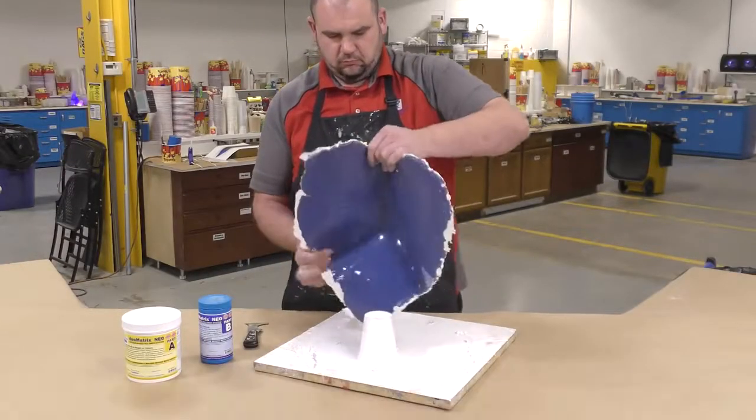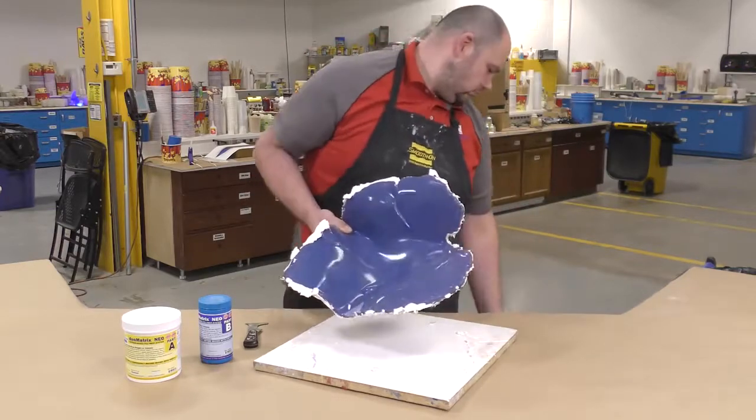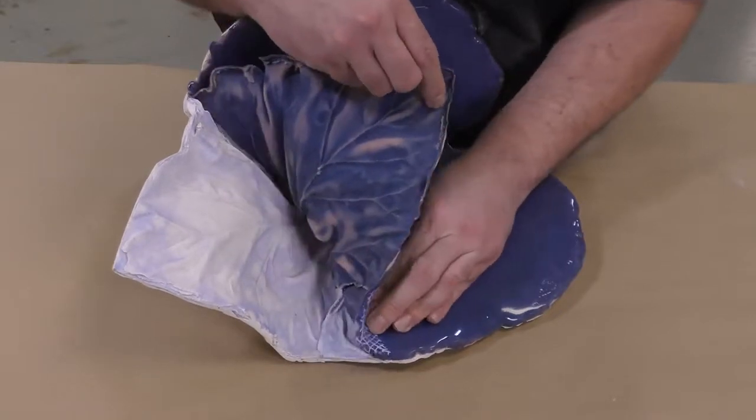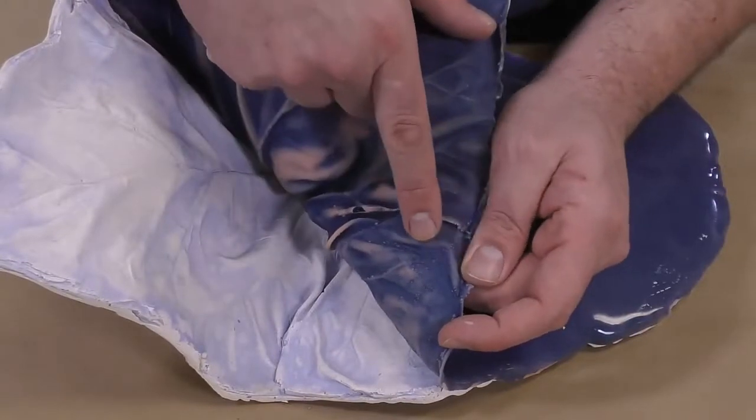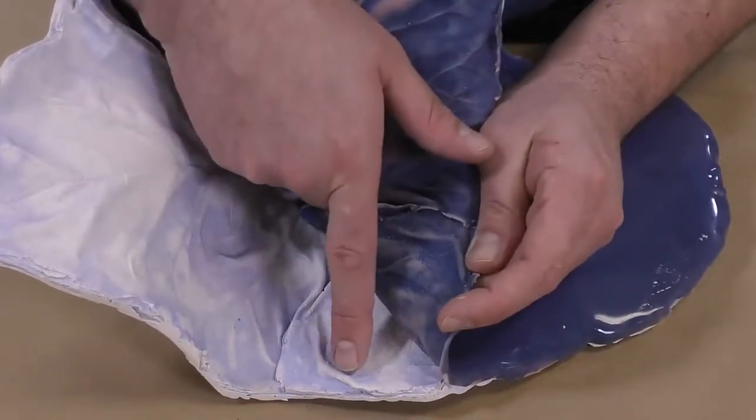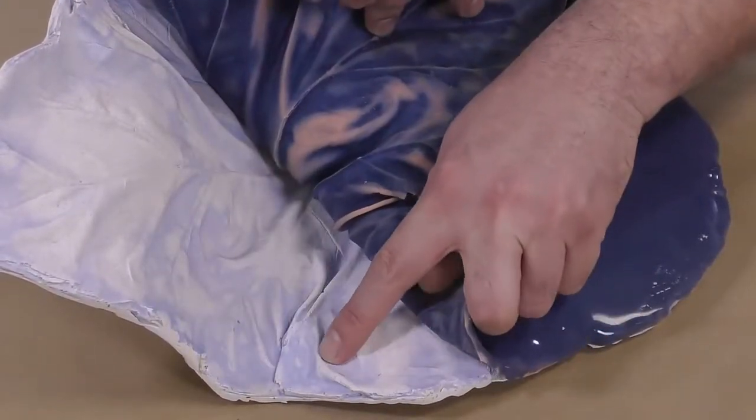Now that the material has fully cured it's time to demold our casting and see how well we did on the repair of the mold. As you can see here the fixed section of our mold held up great and did not transfer any blemishes onto our casting. This mold can now be put back into production and the fixed tear will hold up for many more castings.